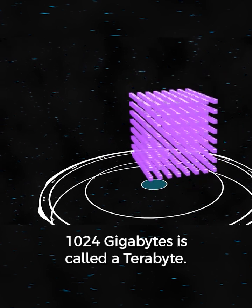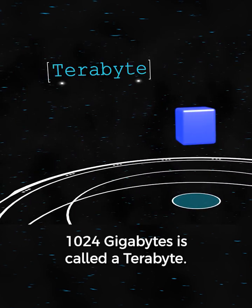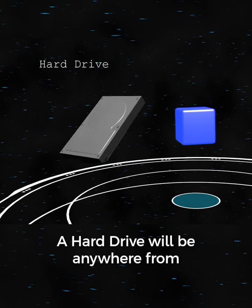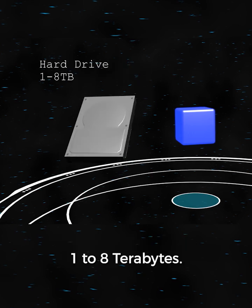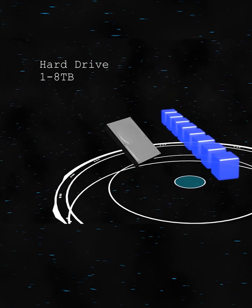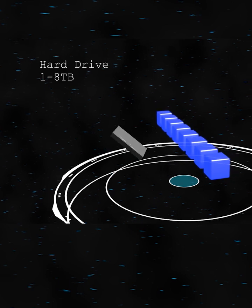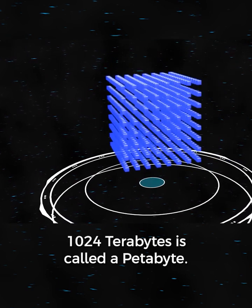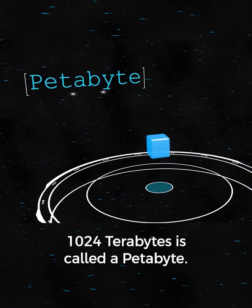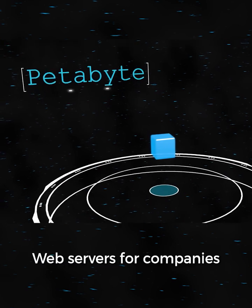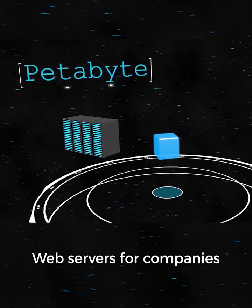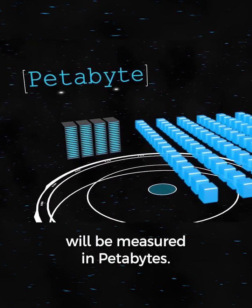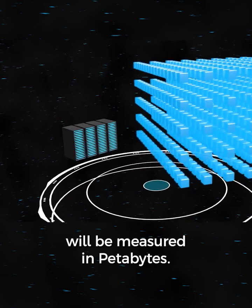1024 gigabytes is called a terabyte. A hard drive will be anywhere from 1 to 8 terabytes. 1024 terabytes is called a petabyte. Web servers for companies such as Facebook, YouTube, or Amazon will be measured in petabytes.